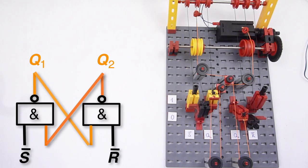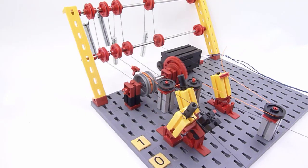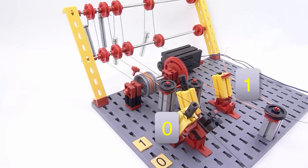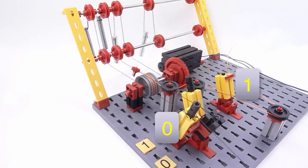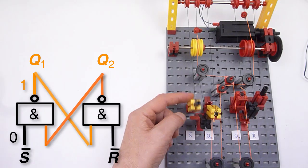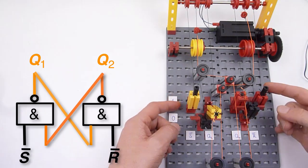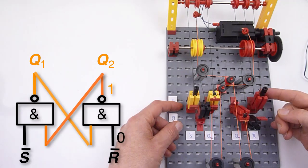How does this flip-flop work? If one of the inputs of a NAND gate is zero, the output is one, no matter what happens on the other input. Therefore, Q1 becomes or stays one if S is pulled to zero, and Q2 becomes or stays one if R-bar is pulled to zero.